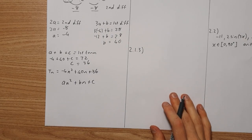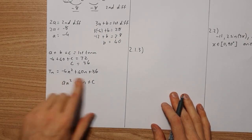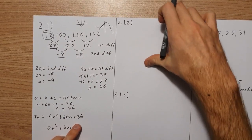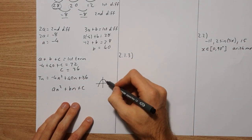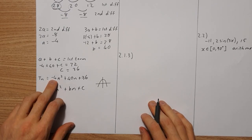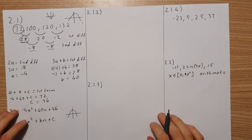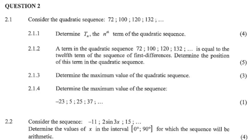That is our quadratic term for the sequence. As noted, it's going to be an upside-down parabola because of the negative 4 coefficient. Now looking at question 2.1.2: a term in the quadratic sequence 72, 100, 120, 132 is equal to the 12th term of the first-difference sequence. We need to determine the position of that term in the quadratic sequence.